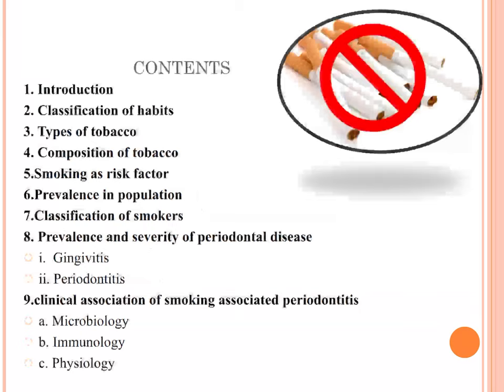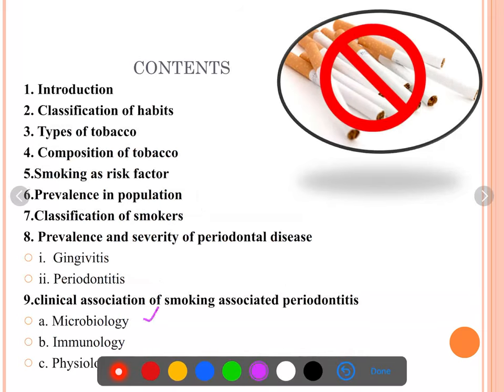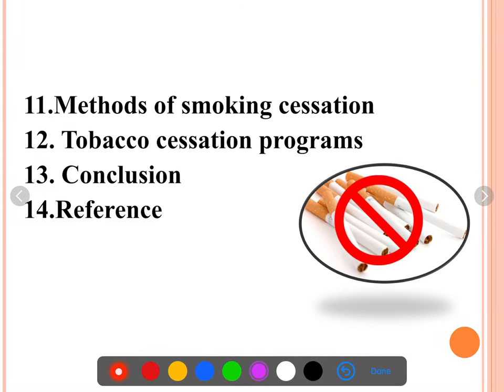Histological perspectives of theories of periodontal disease etiology is just included for an idea. Moving on to the contents — it is very important to make a beautiful index. You have to write about the introduction, classification, types of tobacco, composition of tobacco (very important), smoking as a risk factor, and prevalence. For prevalence, rather than memorizing recent census data, write something like how it is more common in males and in low socioeconomic groups. Then cover prevalence and severity of periodontal disease in gingivitis and periodontitis, clinical association, microbiology, immunology, physiology, methods of smoking cessation, tobacco cessation programs, conclusion, and references.